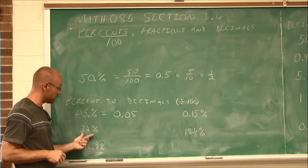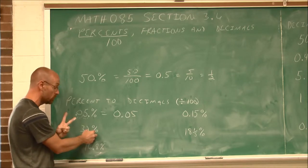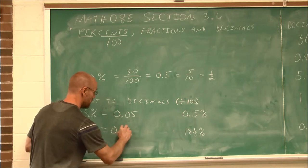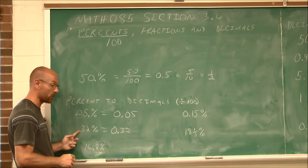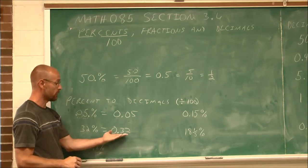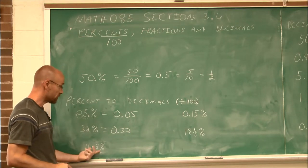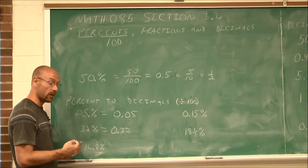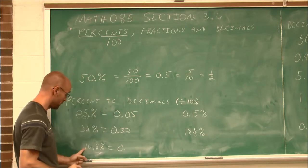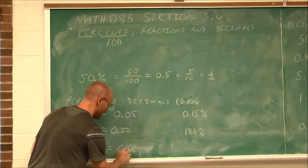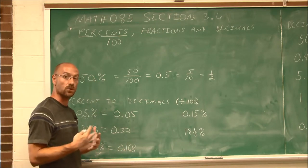For 16.8%, we move the decimal two spots to the left, which puts it in front of the 1, giving us 0.168. Pretty simple once you do enough of them — that's what math is all about, repetition. Now for 0.15%, it's already a decimal but also a percent, so we do the same thing and divide by 100.